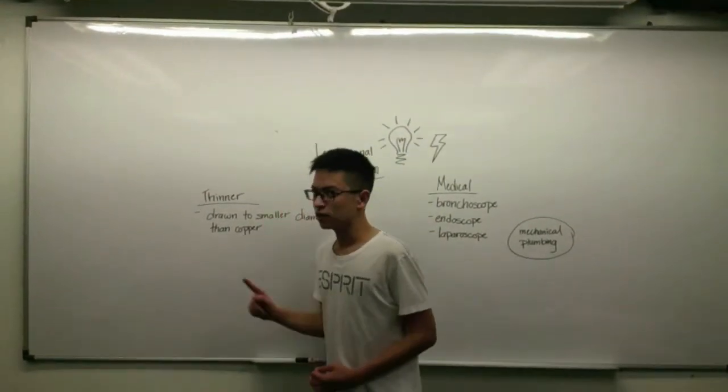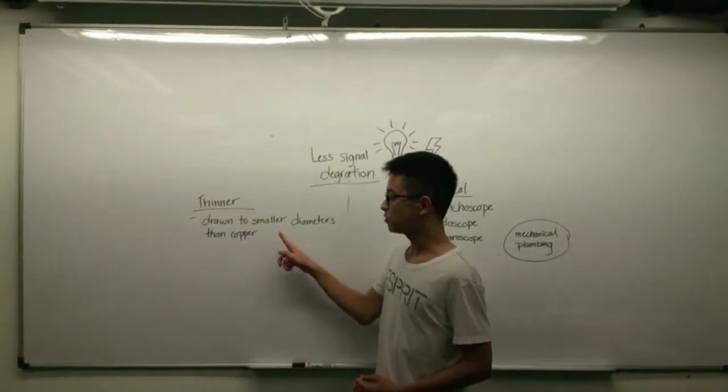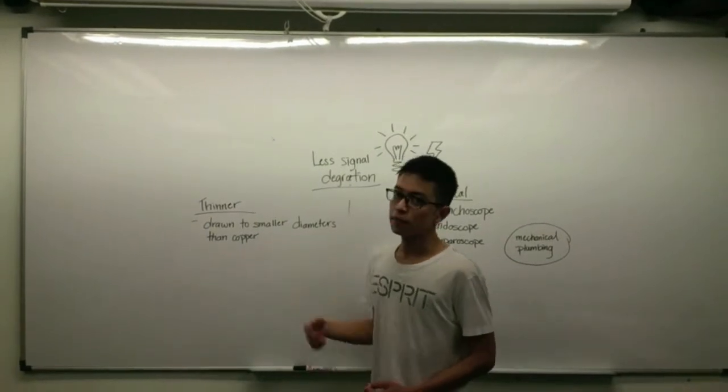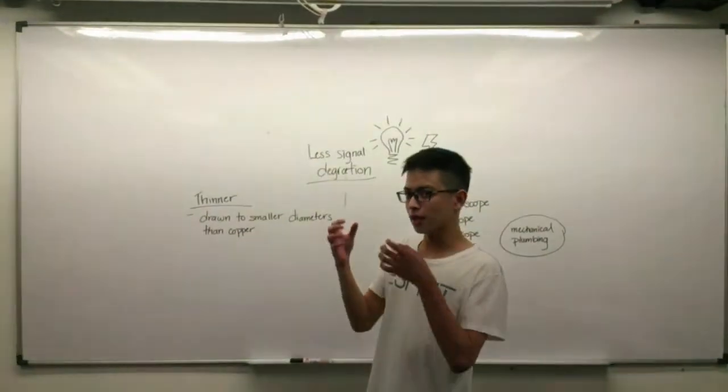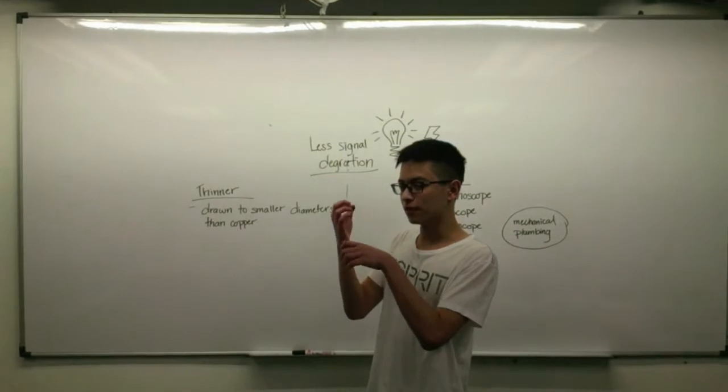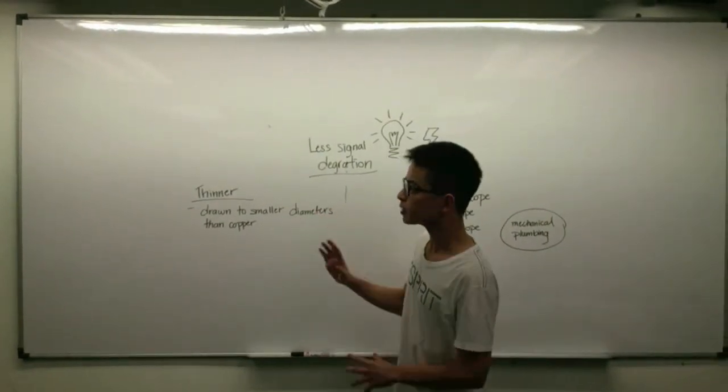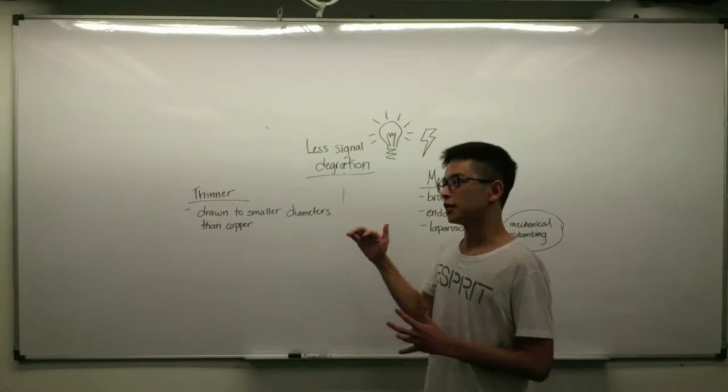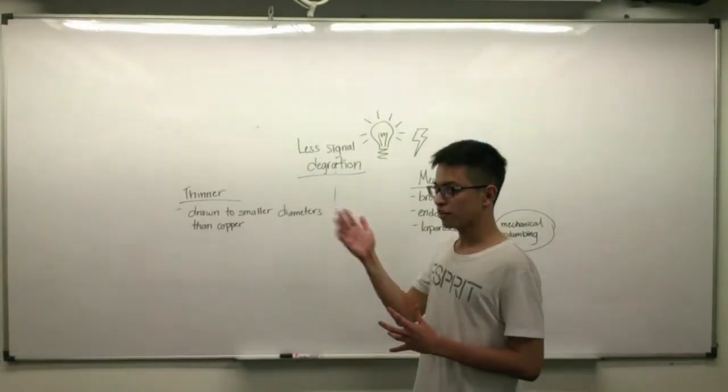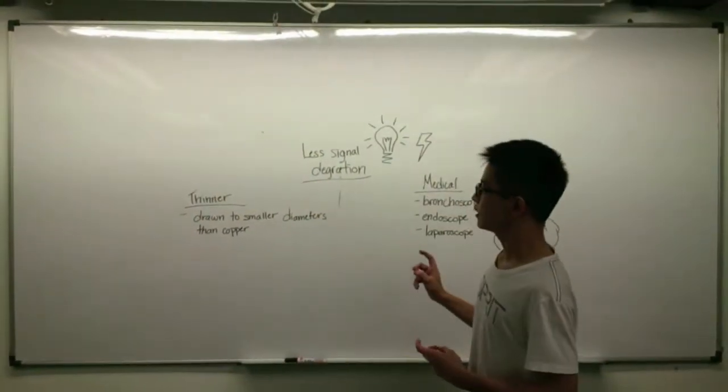So the next point would be that it is thinner than your standard copper wire and it can be drawn to smaller diameters than copper, meaning that it can form a larger bundle and it can carry more information at once.